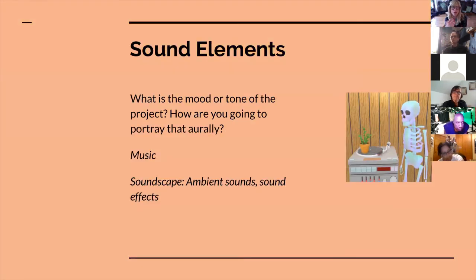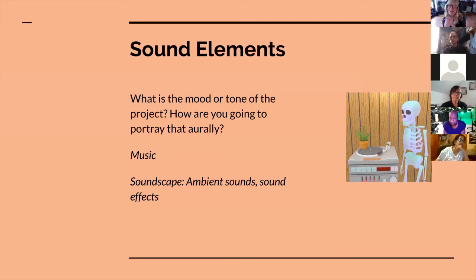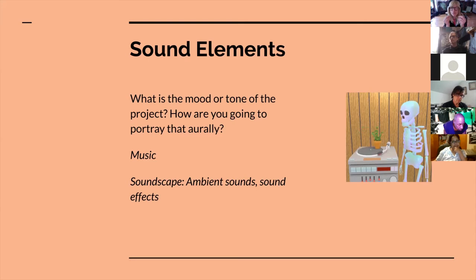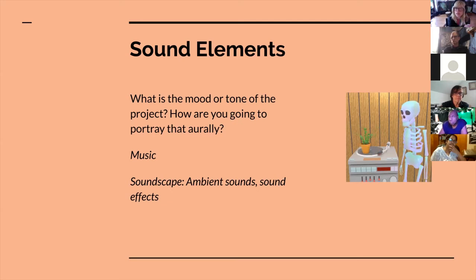What is the mood or tone of your project and how are you going to portray that orally — the sound elements? This is just as important as visuals. This is a video-audio medium with both equally. Think about what kind of music you're going to include. Music has an extreme effect on mood and tone — you can really change the mood of your piece on music alone. Think about that way ahead of time so you're not scrambling at the end. Ambient sounds and sound effects — every piece you make is going to need some amount of sound elements beyond just dialogue, and that stuff informs your viewer of what kind of piece they're looking at.